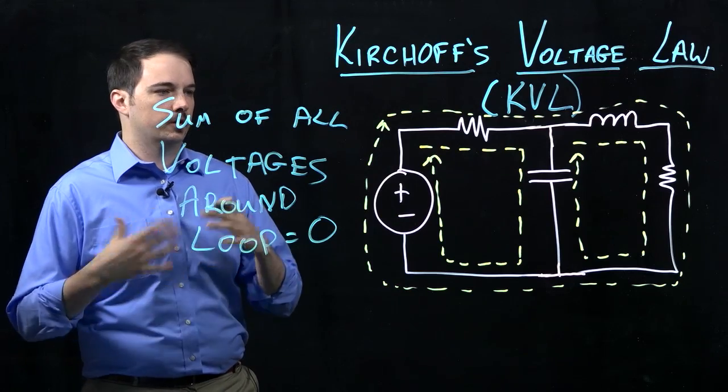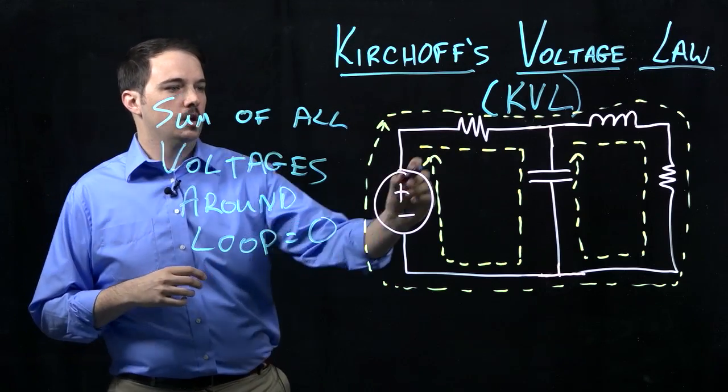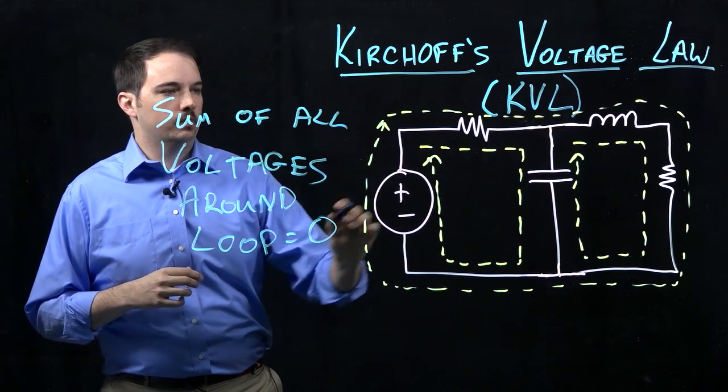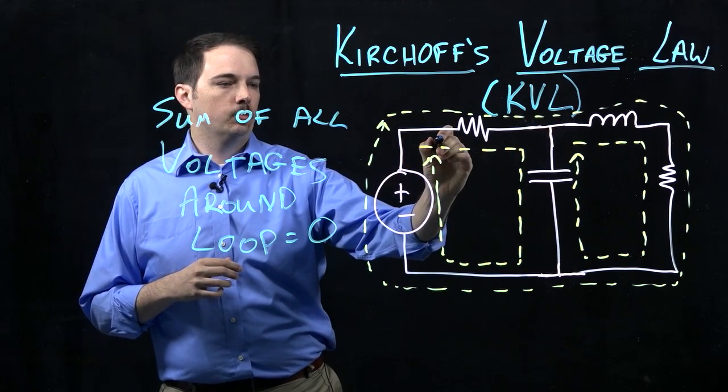So if I go around to each circuit element and just start defining a given voltage, we can begin to work through the problem here. So if I go plus, let's call this V1 plus to minus across our resistor.